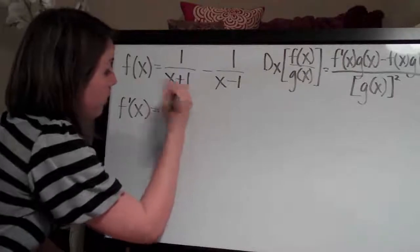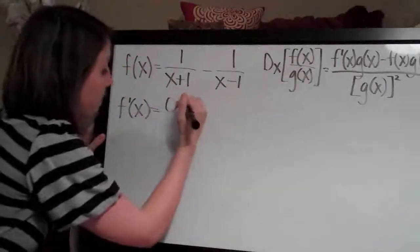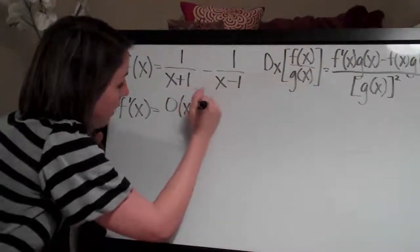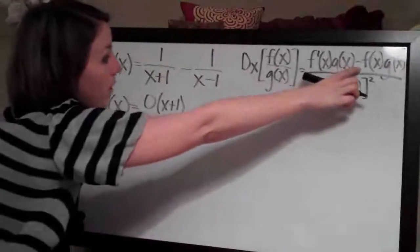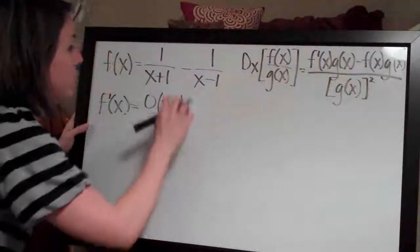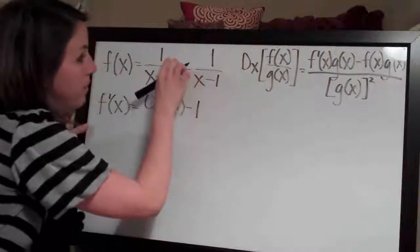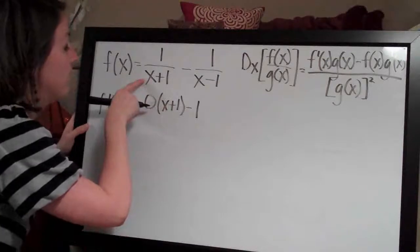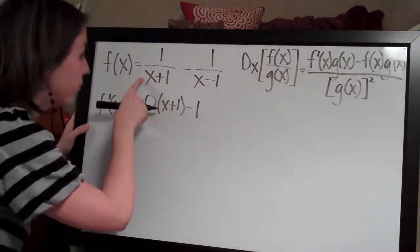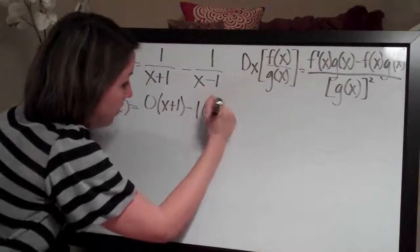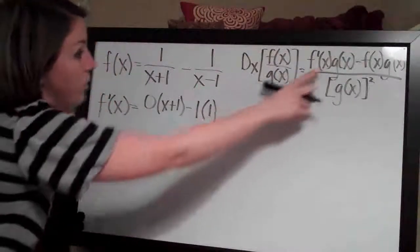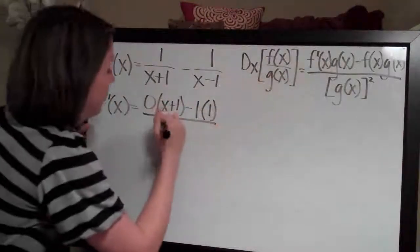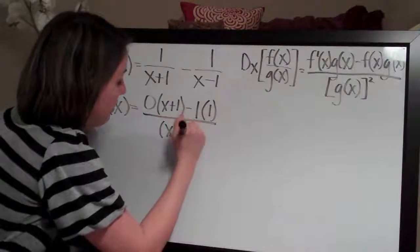So we have 0 times g of x, which is x plus 1, and then minus f of x, which is 1, times g prime of x — the derivative of the bottom, x plus 1, which is just 1. Then we divide by the bottom squared, which is x plus 1 squared.